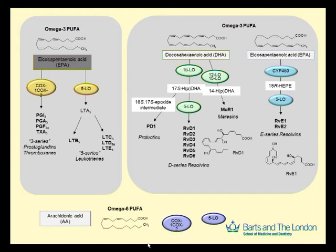Omega-3, shown in the left part of this slide, can replace arachidonic acid and use the same enzymes to lead to the production of prostaglandins of the 3 series or leukotrienes of the 5 series — molecules which have some bioactivity, at least in experimental settings, at quite large concentrations. What has happened in the last decade, predominantly thanks to the work of Dr. Charles Serhan at Harvard, is the identification of new molecules produced by the catabolism of omega-3 fatty acids. Dr. Serhan not only pioneered this research looking for bioactive molecules, but also elucidated their structure and identified the biosynthetic pathway — which may be active at much lower doses.